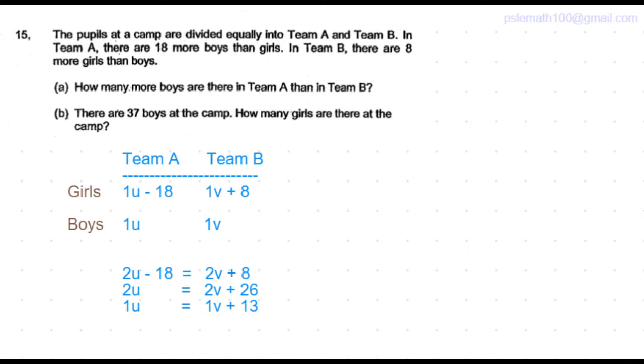1u is the total number of boys in Team A and 1v is the total number of boys in Team B.